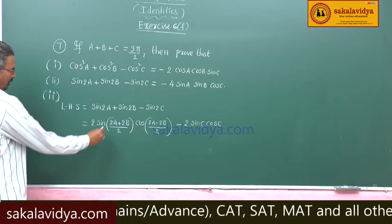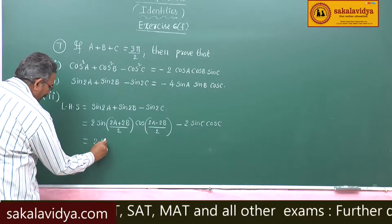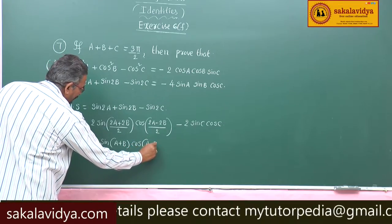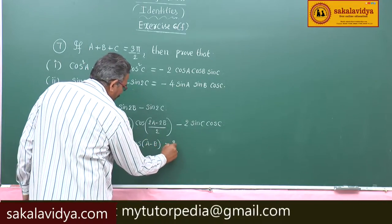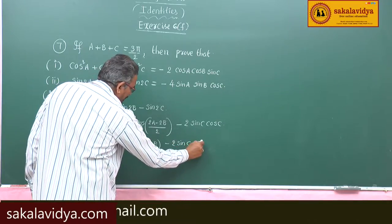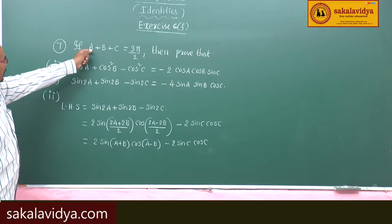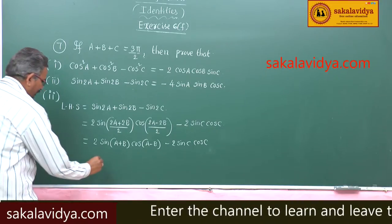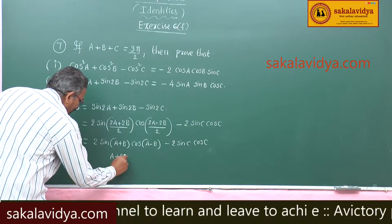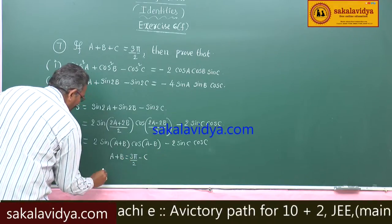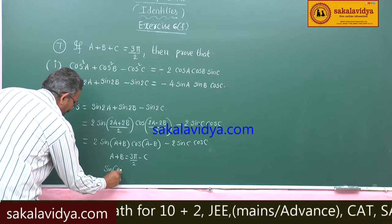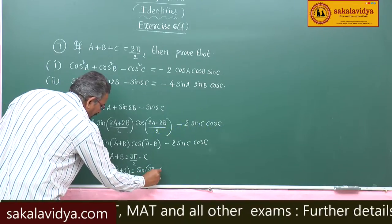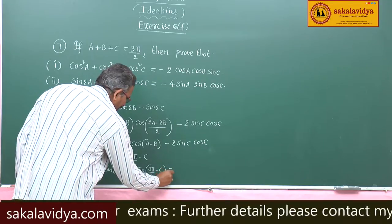Now, this can be written as 2 sin(a plus b) times cos(a minus b) minus 2 sin c cos c. Since a plus b plus c equals 3π/2, we find the value of sin(a plus b). So a plus b equals 3π/2 minus c, which gives sin(a plus b) = sin(270° minus c) = minus cos c.